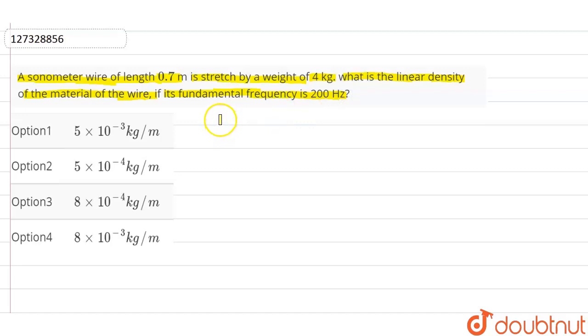Here, we have a sonometer wire length. It is said that it is stretched by 4 kg of mass. Then, it provides the fundamental frequency of 200 Hz. At that time, we have to find the linear density of wire.